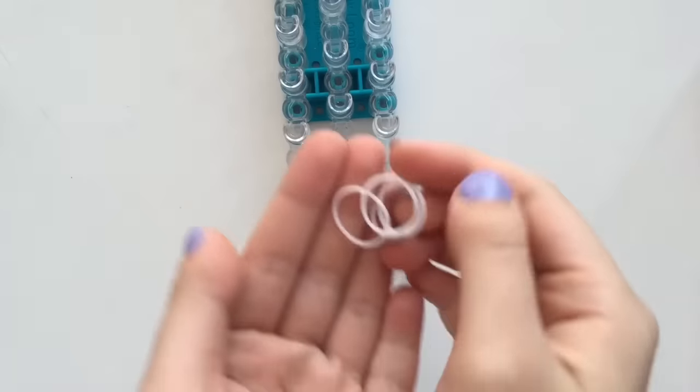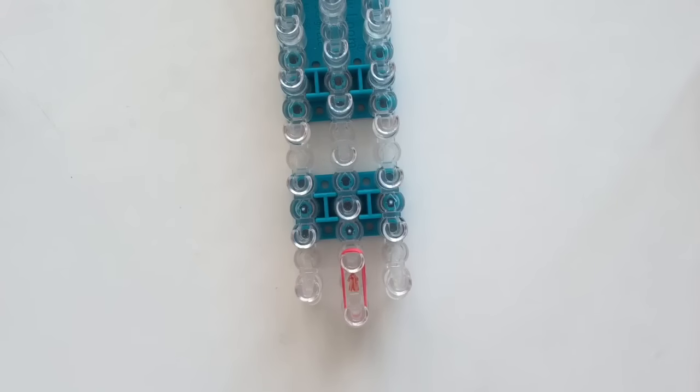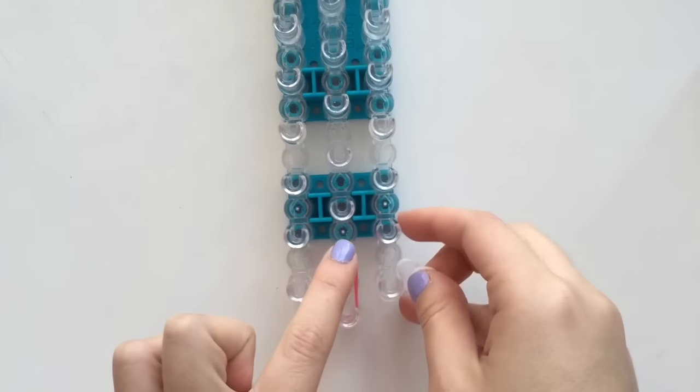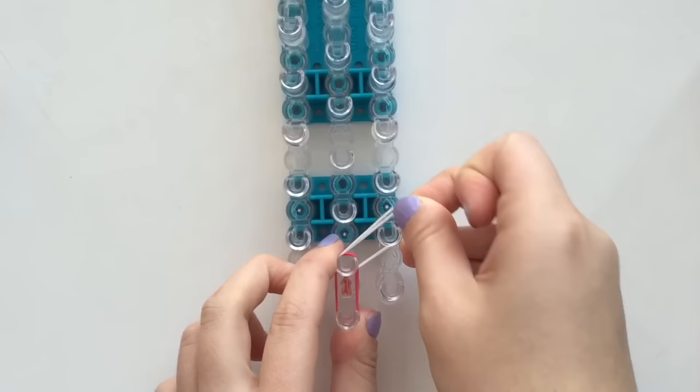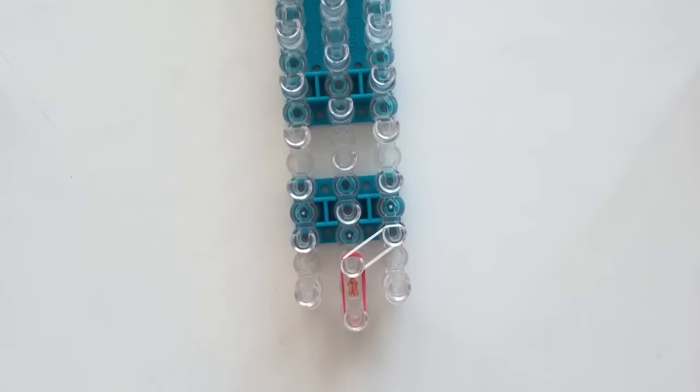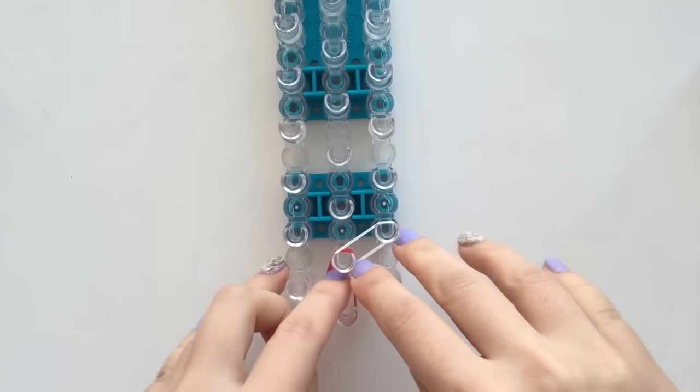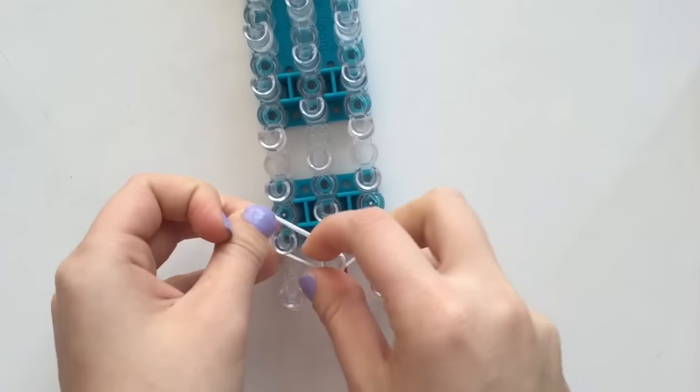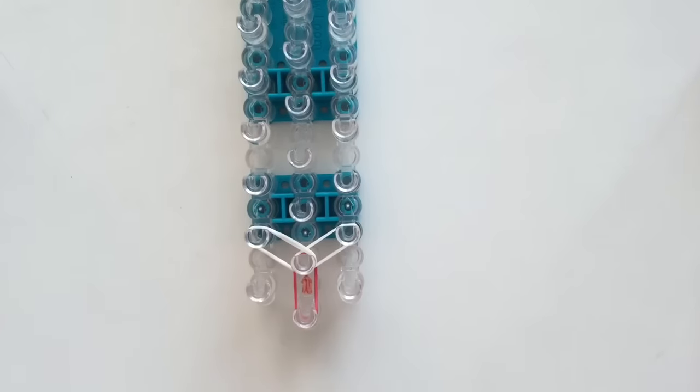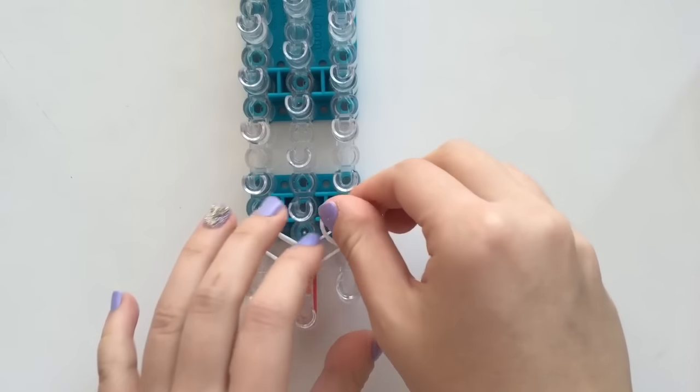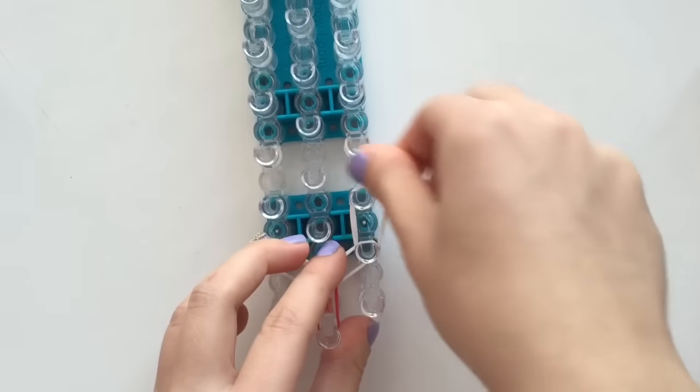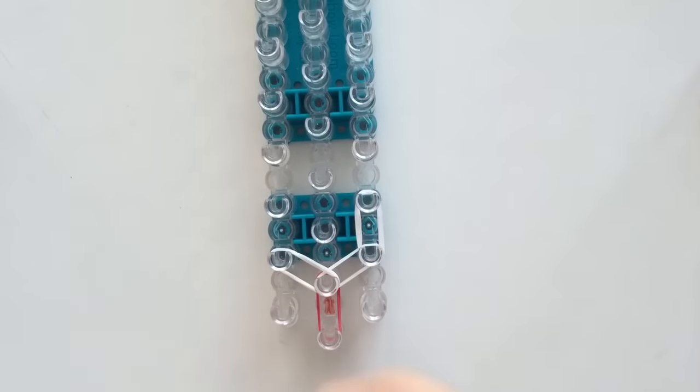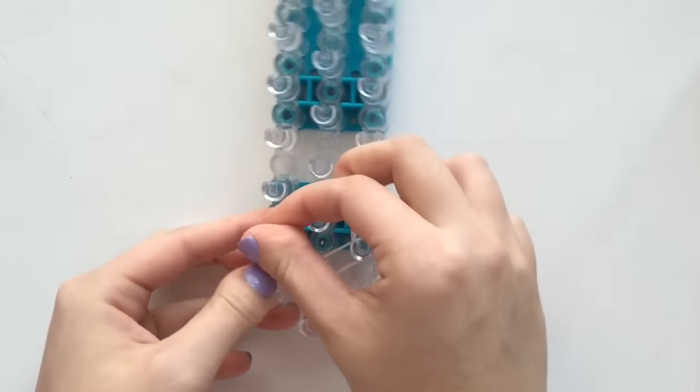And then I'm going to be taking two white rubber bands which is my frosting color. So using two bands at a time, I'm going to go from the center to the second right peg and from the center to the second left peg. Continue using double bands. Now I'm going to go up the loom once on the right side and on the left side.